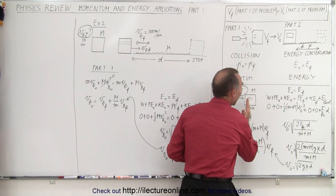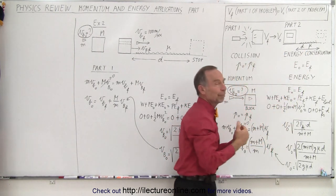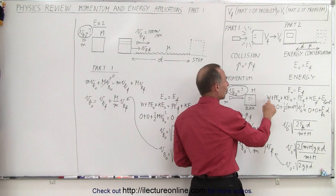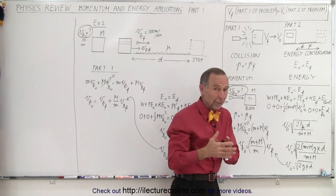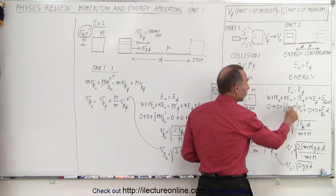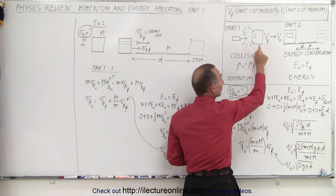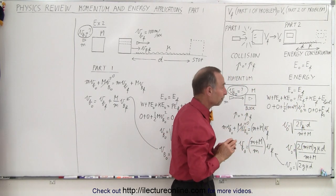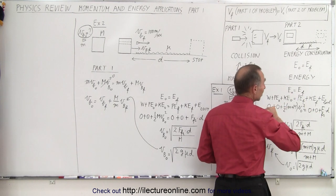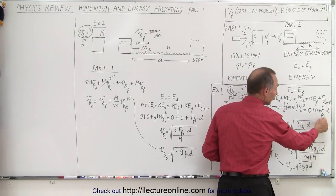The energy initial equals the energy final — this is after the collision. The block and bullet start moving away, and let's say they run over a rough patch where there's friction and eventually the block comes to a stop. Any work put into the system is zero, potential energy is zero because there's no height, and the initial kinetic energy is one-half mv squared — combining the mass of the bullet and the block. On the right side, there's no potential energy, no kinetic energy since the block stopped, and the energy lost is the work to overcome friction: friction force times distance traveled.